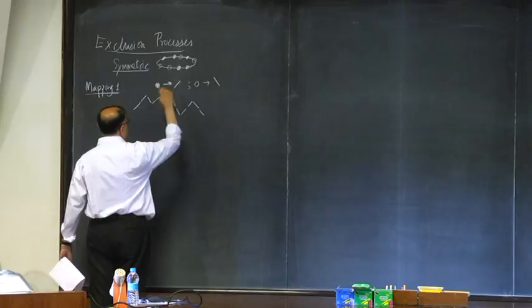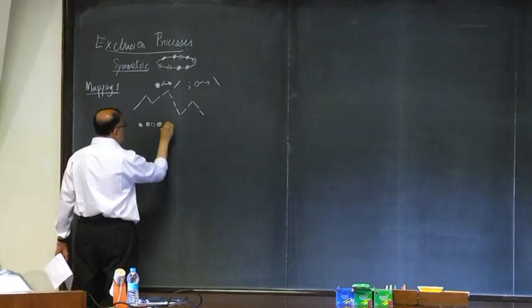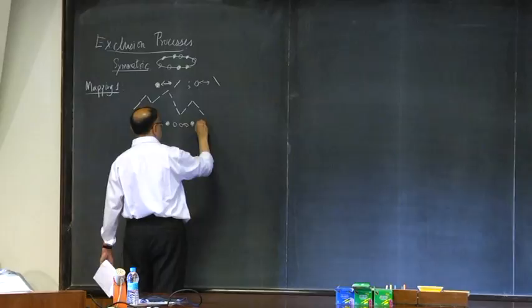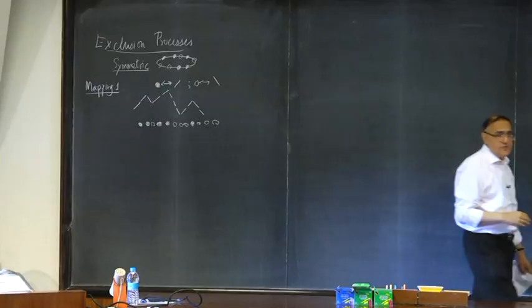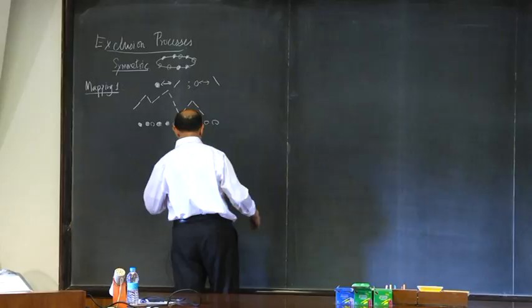Suppose you map this configuration with two particles. Here's a particle, here's another particle, this one is a hole, two more particles, three holes. So there is a mapping, and clearly it's a one-to-one mapping: given the set of particles and holes, I can construct the interface.